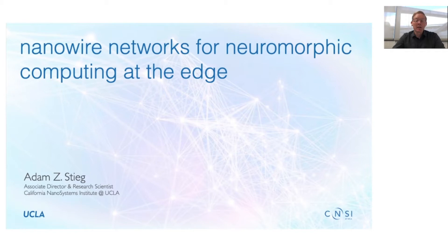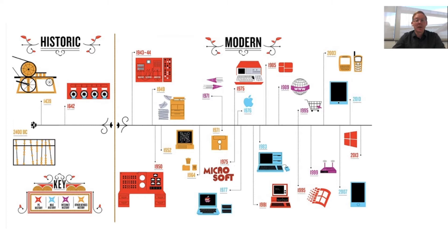Hello, 2020 nanoscientific symposium attendees. My name is Adam Stieg, and it's a real pleasure to speak to you today from UCLA, where I have a brief opportunity to introduce you to some of the work we've been doing here at the California Nanosystems Institute on developing nanowire networks as a new platform technology for neuromorphic computing with specific applications at the edge.